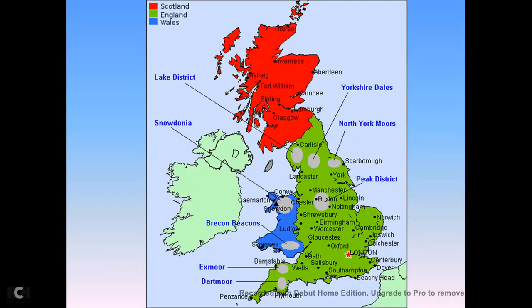Here you see the map of England. If you see the key of the map: in the upper side, red color shows Scotland; green color shows England; and blue color shows Wales. So this whole region was divided into these three parts of England.